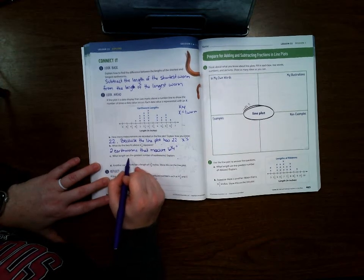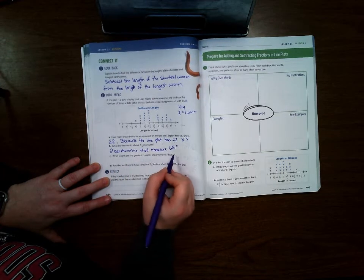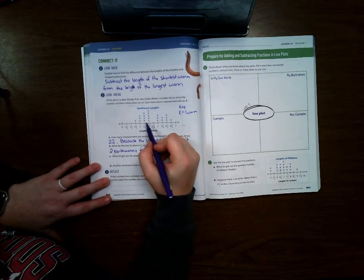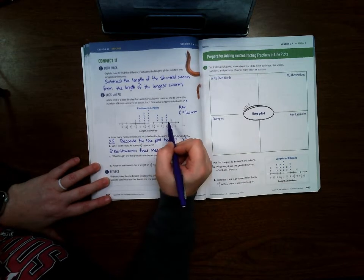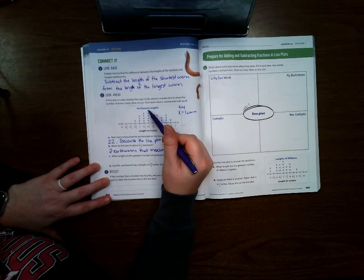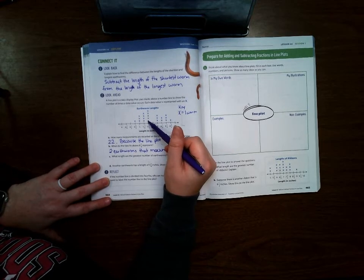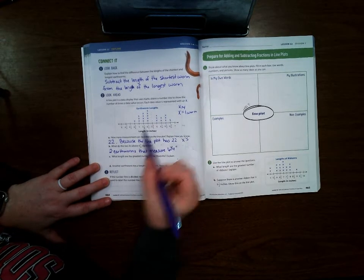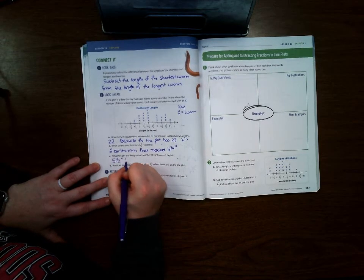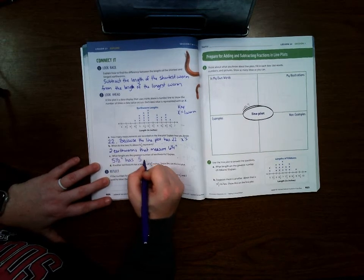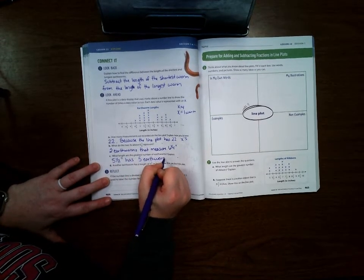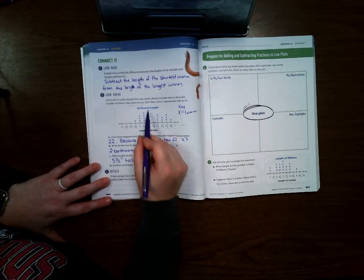What length are the greatest number of earthworms? So that means you're going to find the one that has the most earthworms that are that length. And we can easily see that five and one half has the most. So there's one, two, three, four, five. So it would be five and one half inches has five earthworms because it has five x's above it.